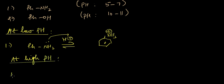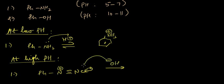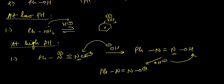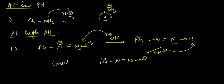At high pH, which means high concentration of OH-, the OH- acts as a nucleophile and attaches itself to the nitrogen atom of the diazonium salt. After another OH- attack, it removes the H+ and we get the diazotate ion. This diazotate ion will act as a nucleophile.